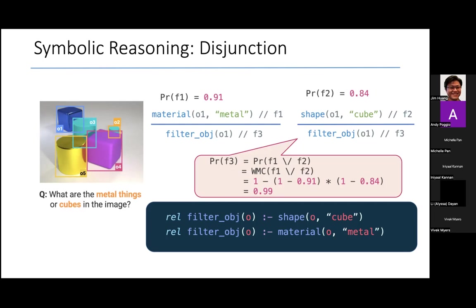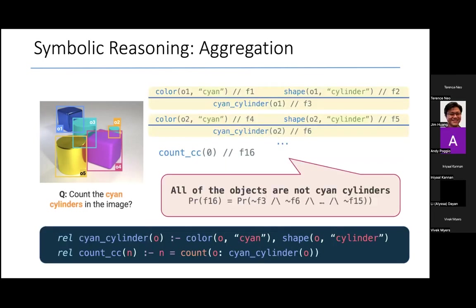Weighted model counting is this very expensive procedure for exact probabilistic reasoning. There's been a lot of advances in making it efficient or in approximating it. But still, when we look at more sophisticated constructs or larger programs and larger databases, we quickly see a combinatorial explosion of possibilities, as I will illustrate using this final query, which is counting the number of cyan cylinders.